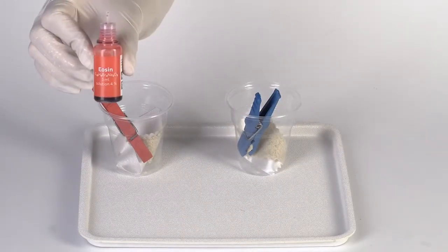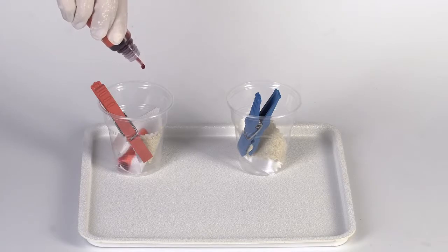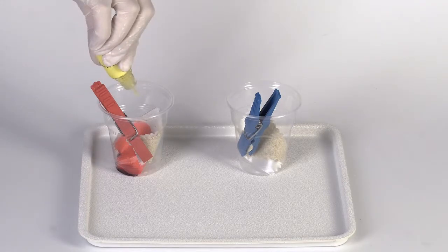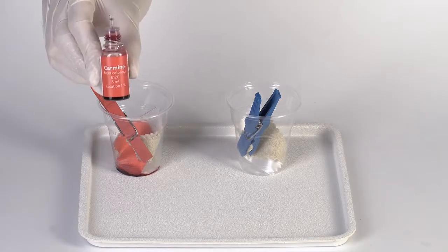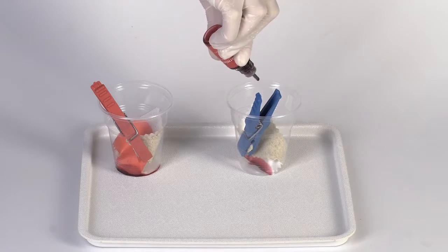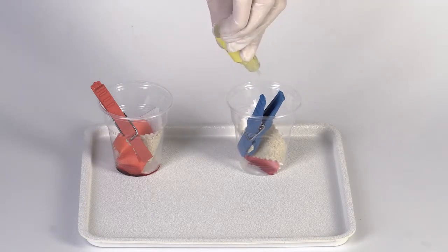Add 15 drops of eosin solution and 5 drops of liquid soap into the cup with the red pin. Then take the cup with the blue pin and add there 15 drops of carmine solution and 5 drops of liquid soap.